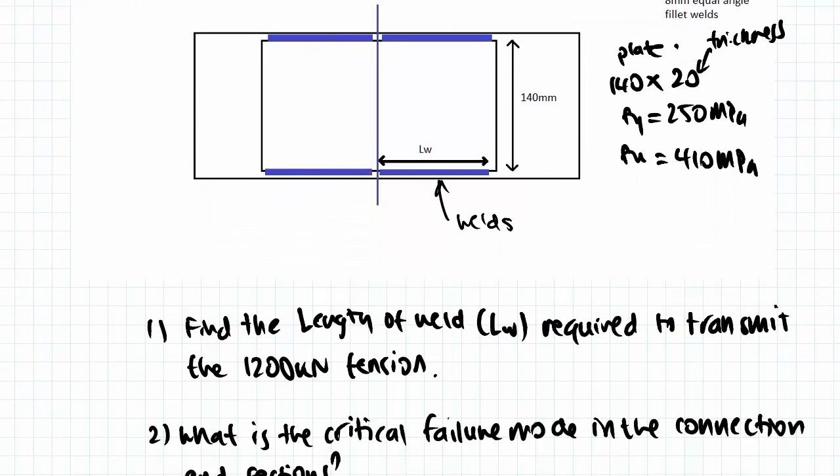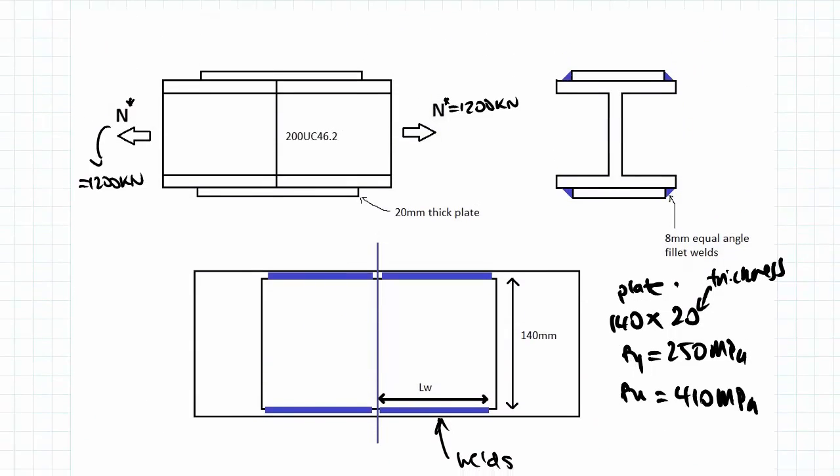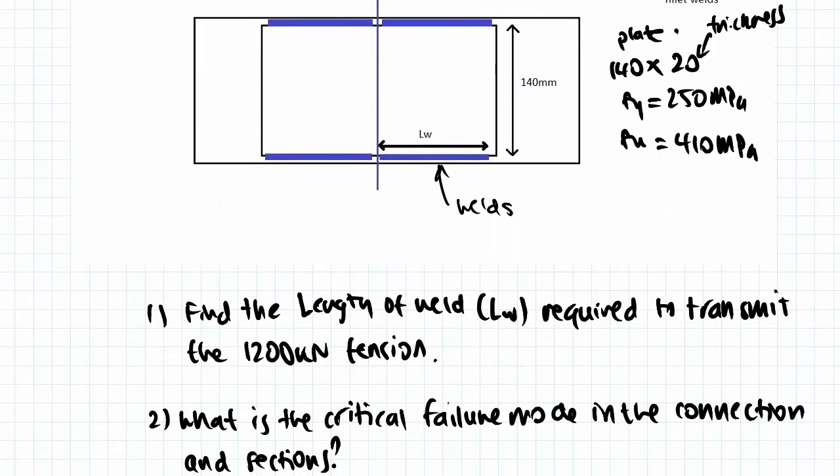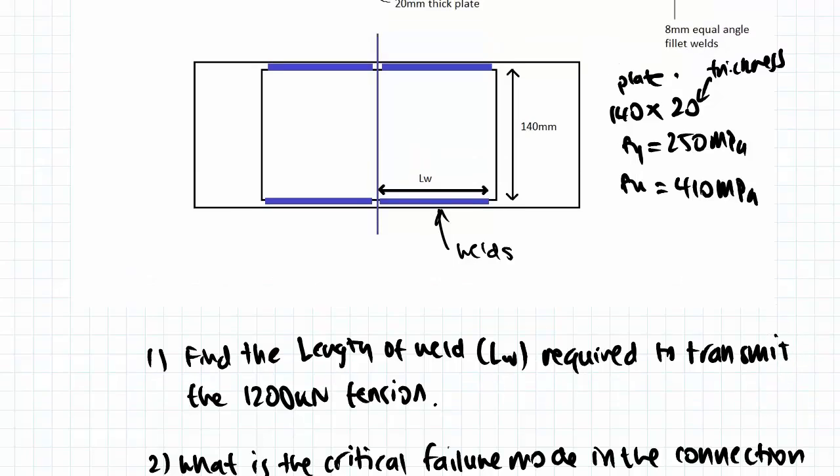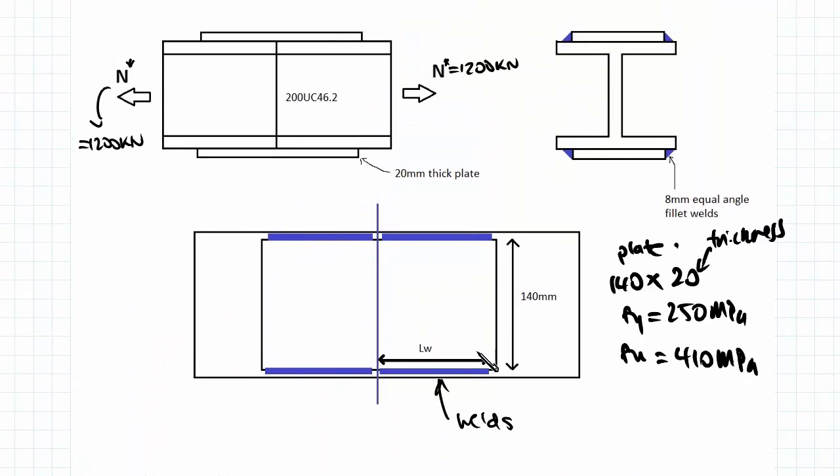So what we want to do in this example is to find the length of the weld. So the length of the weld is from the start to the end of each individual weld. So we want to find the length of the weld required to transmit the 1200 kN tension.